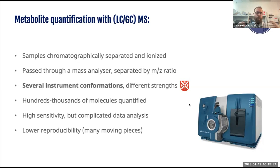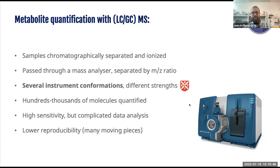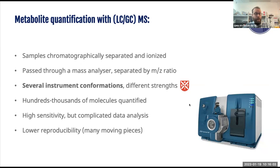Mass spec is good for quantifying hundreds to thousands of molecules, so if you want to comprehensively analyze something, mass spec is usually the way to go. It's incredibly sensitive, but depending on the way you obtain and quantify the data, it can be quite challenging to run data analysis. And since there are so many moving pieces in one of these instruments, they are generally regarded as having lower reproducibility than something like NMR.